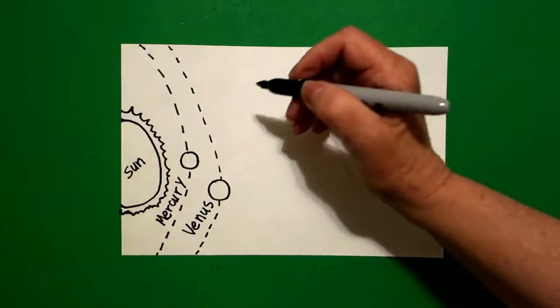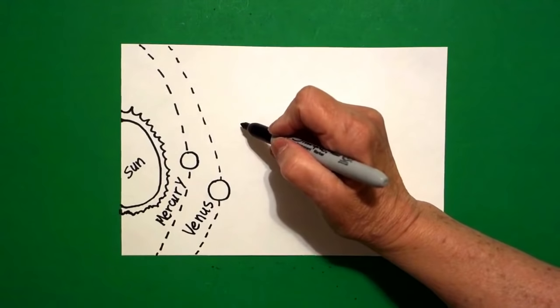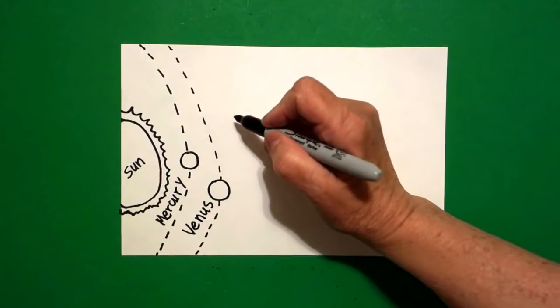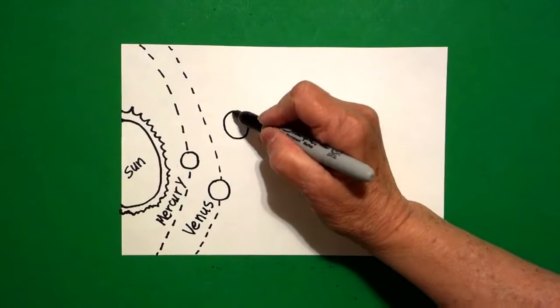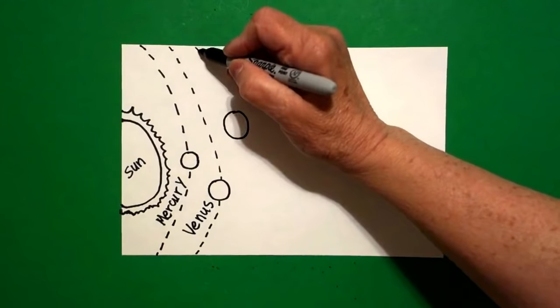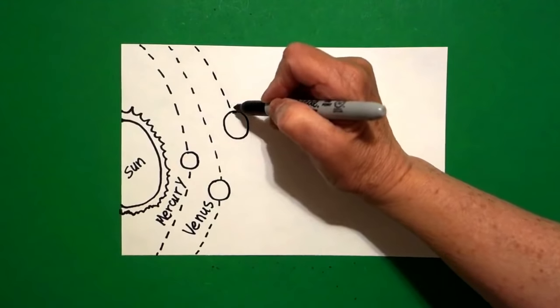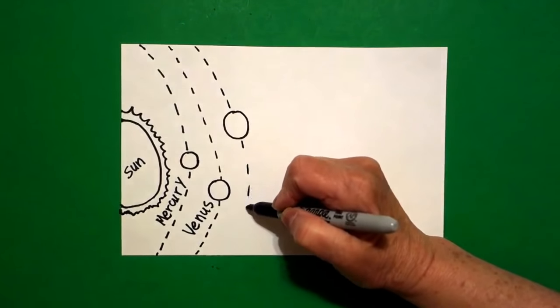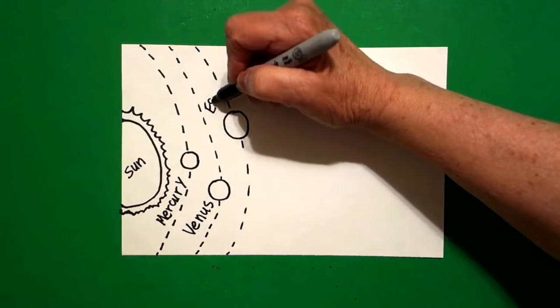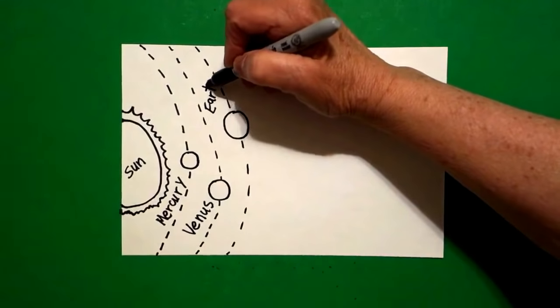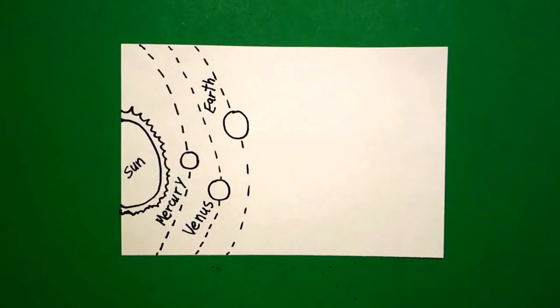Then the third planet is Earth. So I'm going to come above and I'm going to draw a bigger circle, and I'm going to add my dotted line, jump over, keep going, and now I'm going to write E-A-R-T-H, Earth.